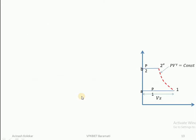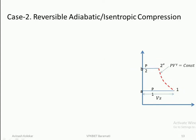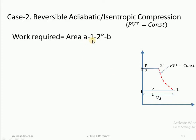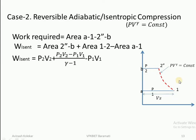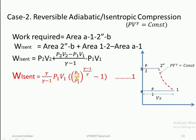Similarly, for isentropic compression, the reversible adiabatic process occurs from 1 to 2 double-dash, where heat losses are zero. Similar to polytropic, we derive the relation using area 1A2-dash-B, calculated as area 2-dash-B plus area 12 minus area A1. The only change is that for the reversible adiabatic process, area 12 becomes P2V2 minus P1V1 divided by gamma minus 1, where gamma is the adiabatic index. This simplifies to gamma/(gamma−1) times P1V1 times [(P2/P1) raised to (gamma−1)/gamma minus 1] — only n is replaced with gamma.